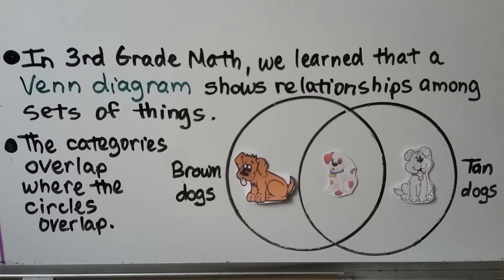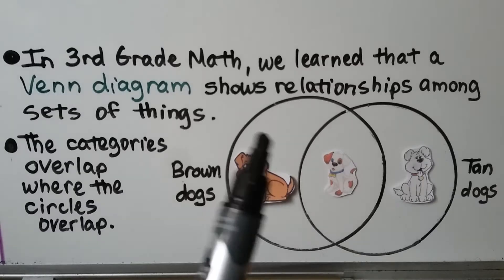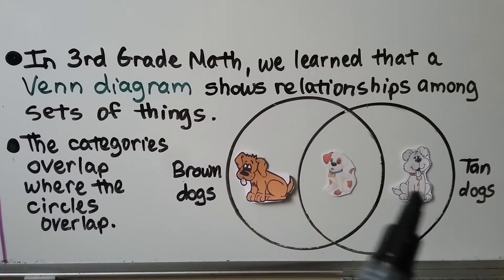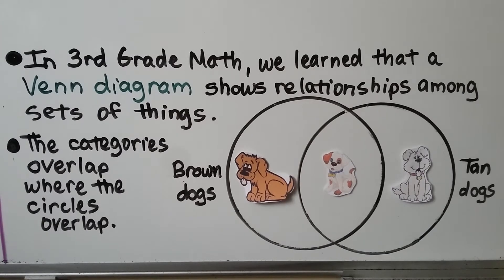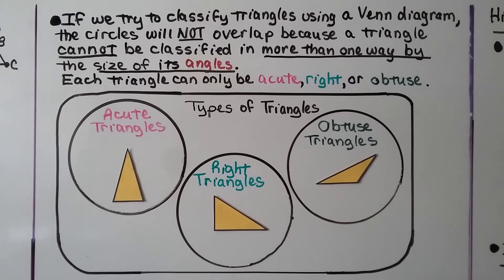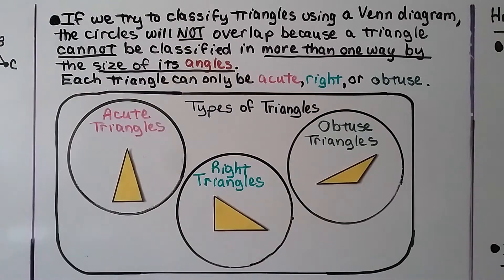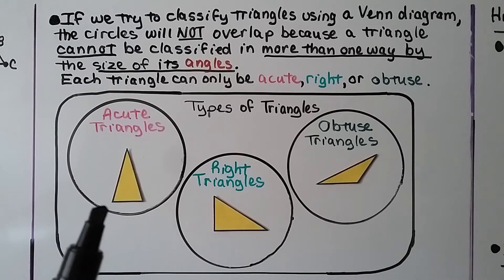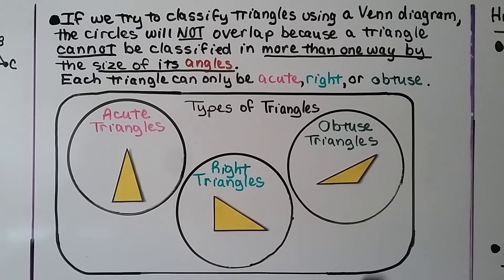In third grade math, we learned that a Venn diagram shows relationships among sets of things, and the categories overlap where the circles overlap. For example, one circle is for brown dogs, another for tan dogs, and where they overlap we have a brown-and-tan dog. If we try to classify triangles using a Venn diagram, the circles will not overlap because a triangle cannot be classified in more than one way by the size of its angles — each triangle can only be acute, right, or obtuse.